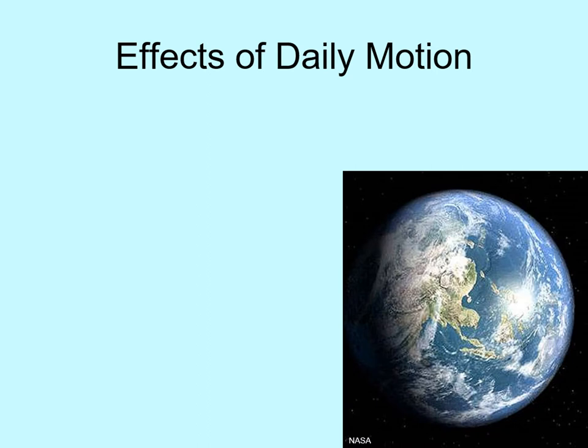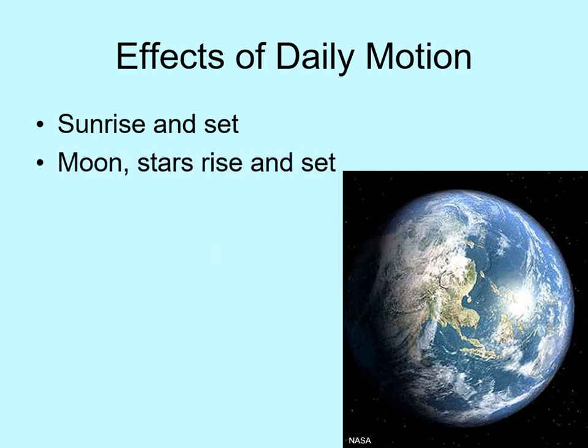There are several things we see in the sky that result from the fact that we spin on our axis each day. The most obvious thing is that the Sun appears to rise and set every day. The Sun rises in the east and sets in the west. The stars, the moon, and the planets also rise in the east and set in the west for exactly the same reason — we're on a spinning globe.